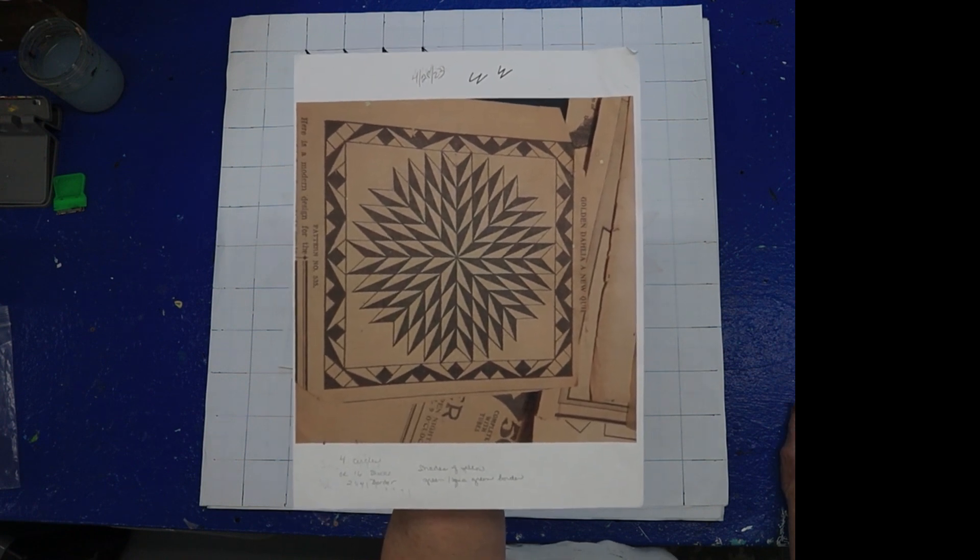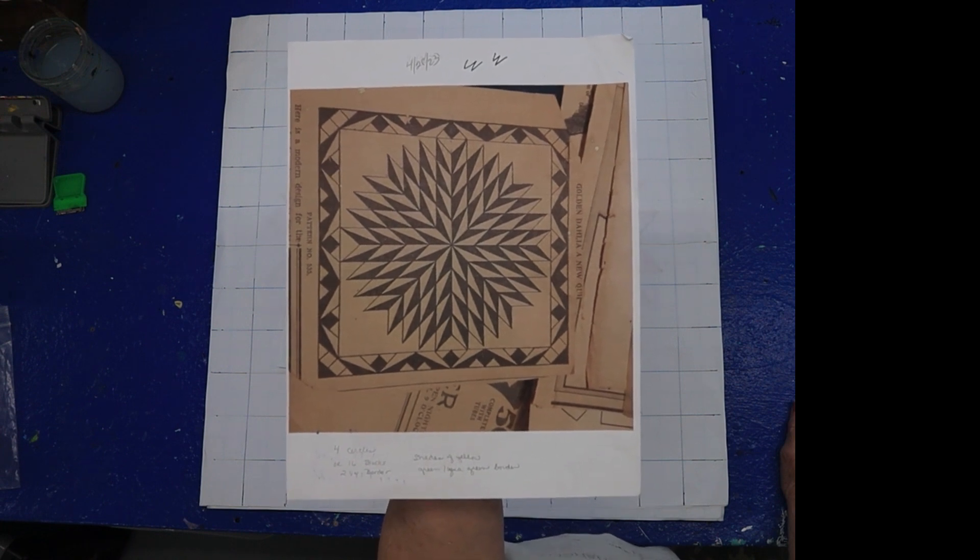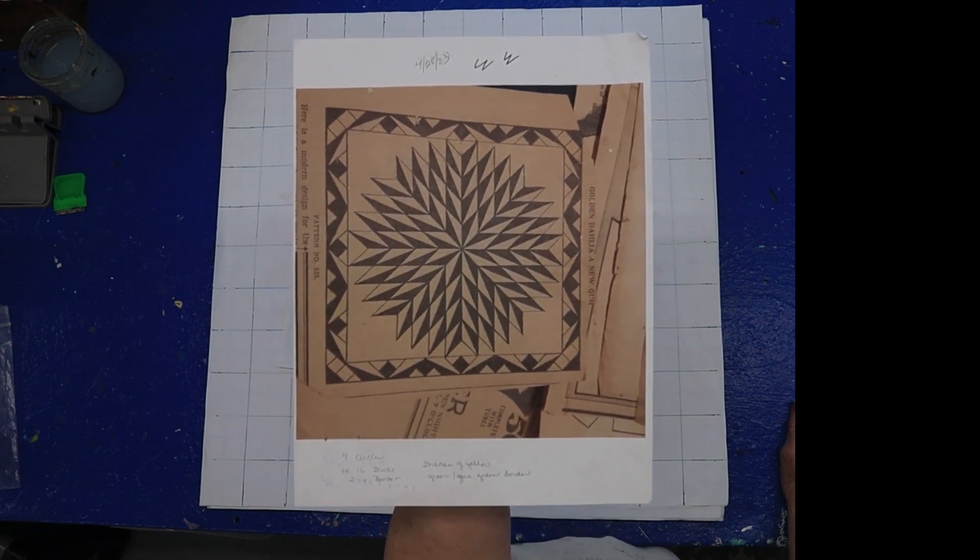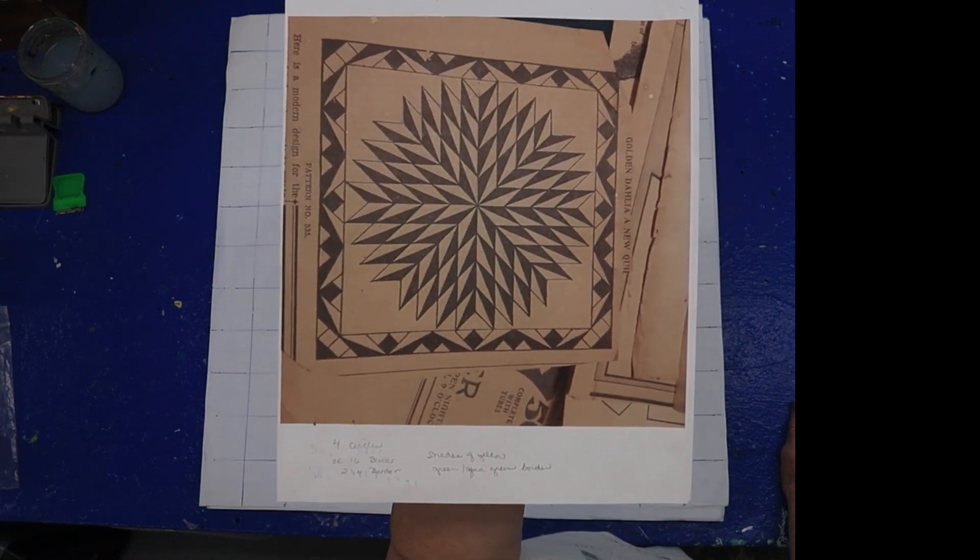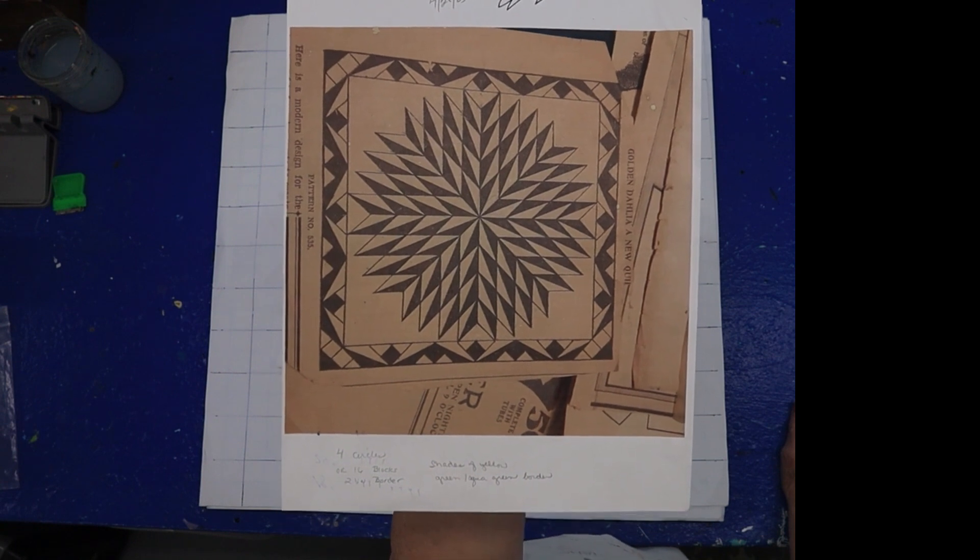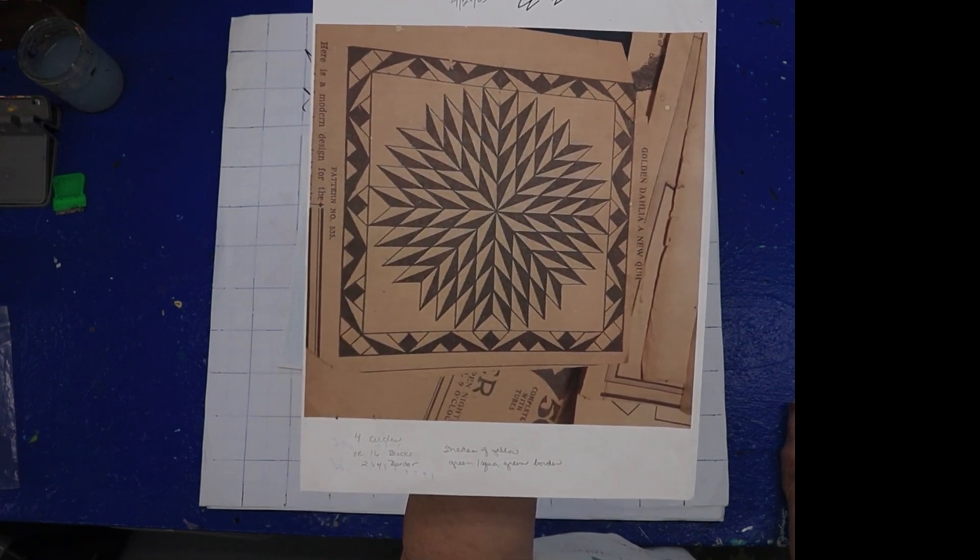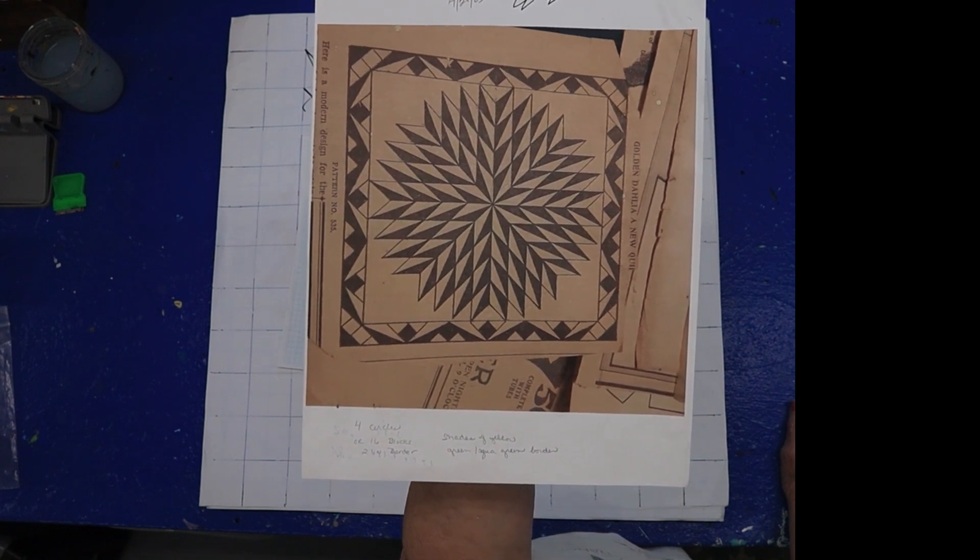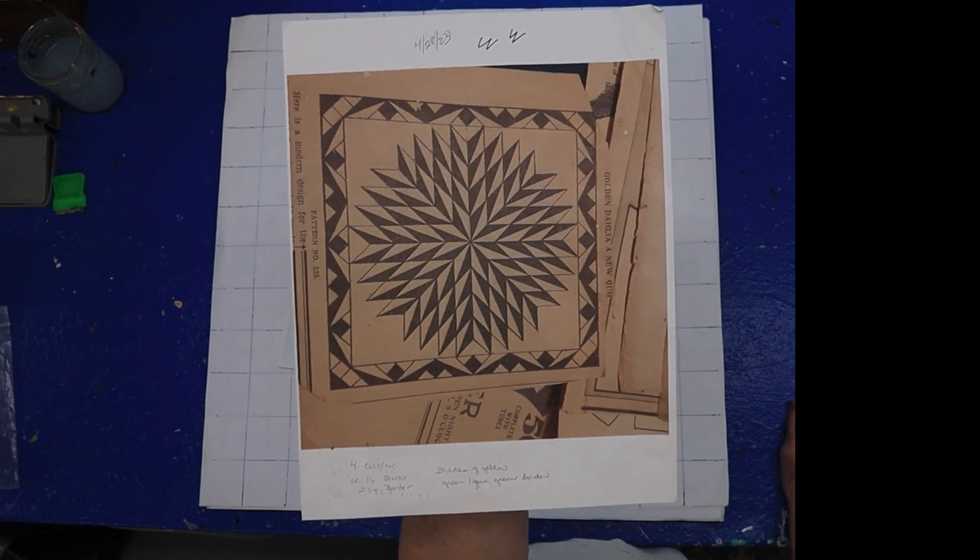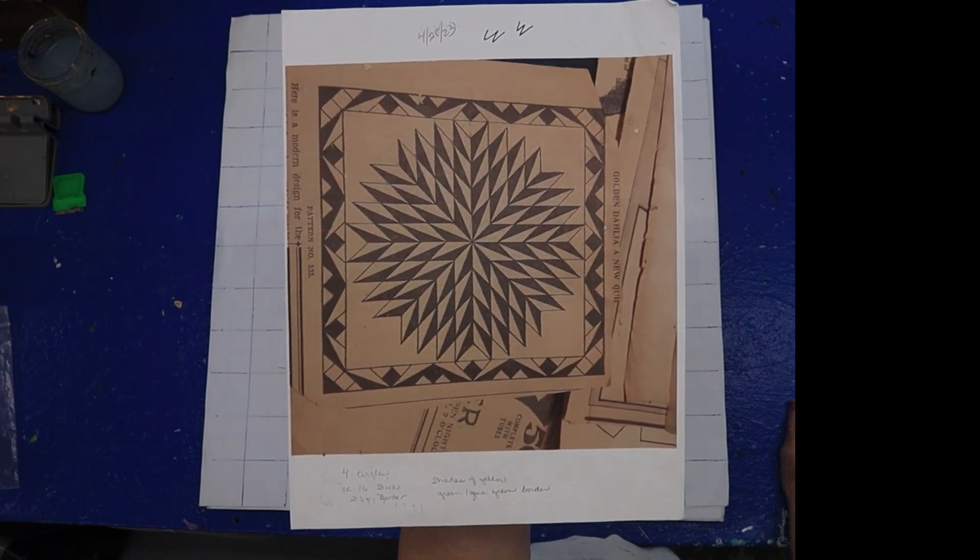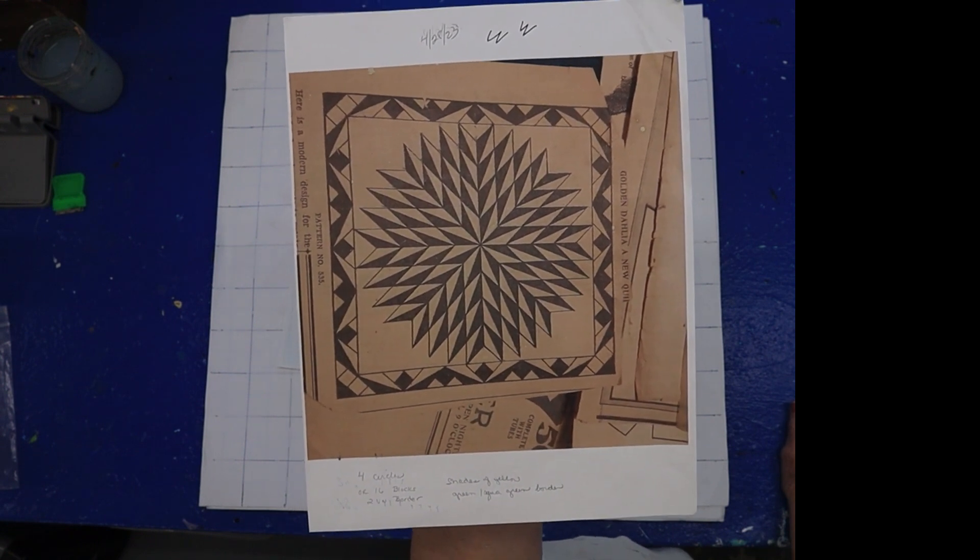Someone shared it and it's a pattern from the Kansas City Star from 1932. And if y'all remember, I wasn't born then, but I remember even when I was young, newspapers and hog feed companies were always family oriented. They would put a quilt pattern in the paper for folks.